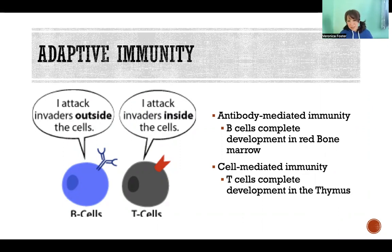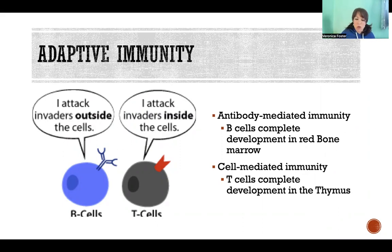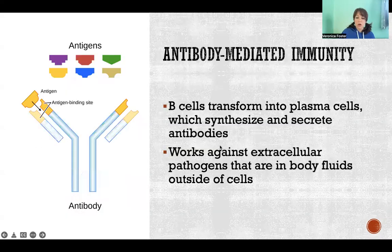T cells kill pathogens that have infected our cells, whereas B cells kill pathogens that are outside of our cells — like in our blood, lymph, or interstitial fluid, floating around in the tissue, but not inside of our actual cells — and that's what I'm going to talk about here.